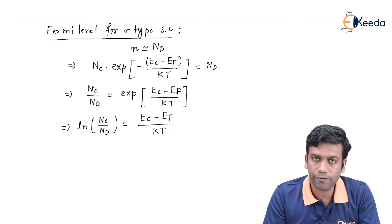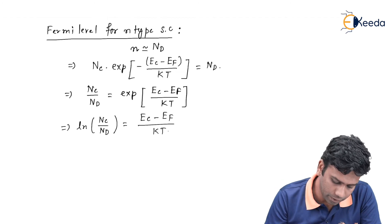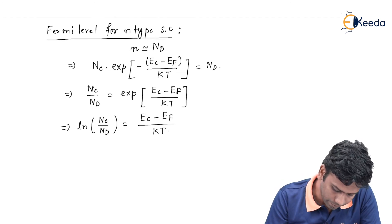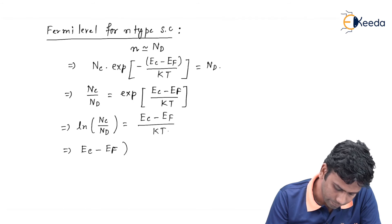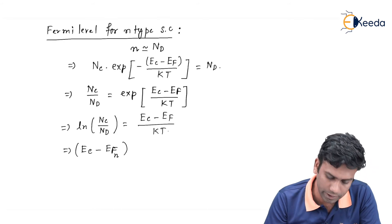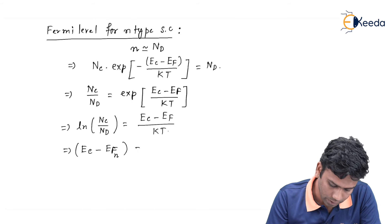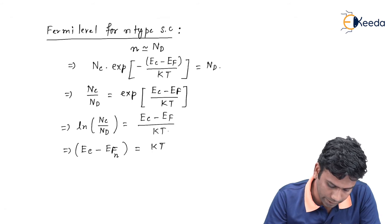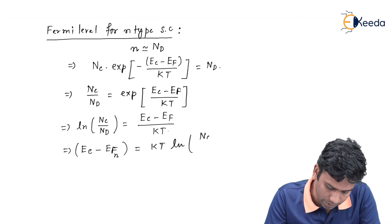From this equation we can find the value of Fermi level inside the n-type semiconductor, that Ec minus Ef, and this is for the n-type semiconductor so I am putting here Nd, will be equal to kT ln Nc by Nd.